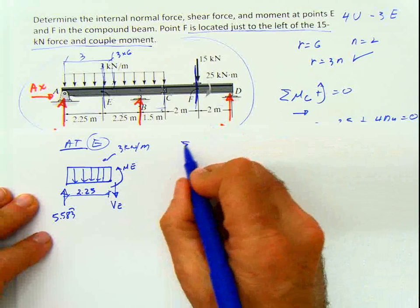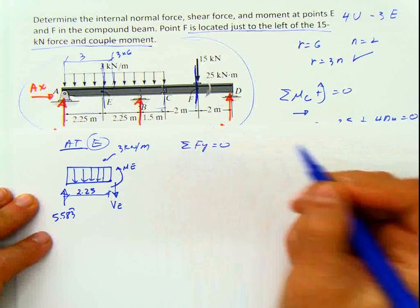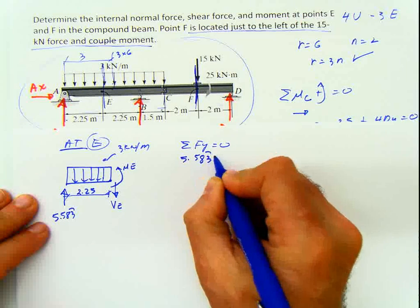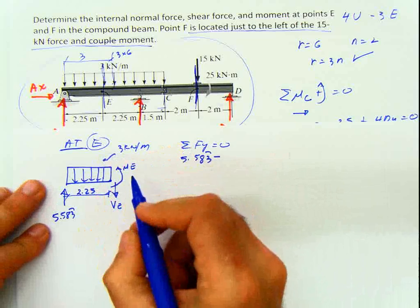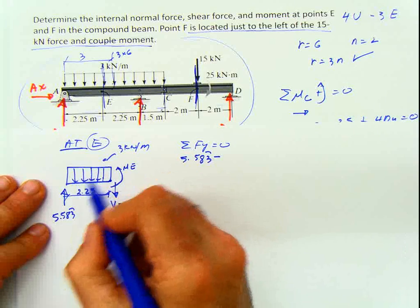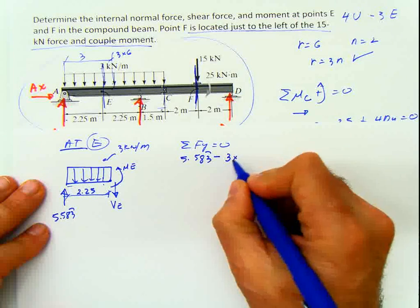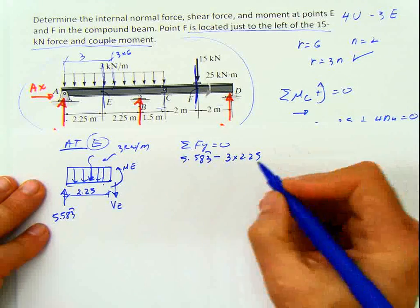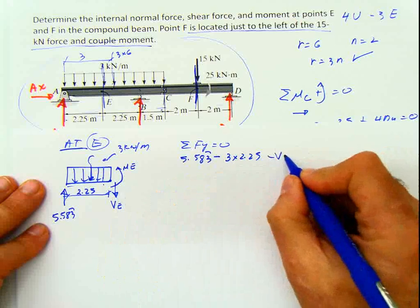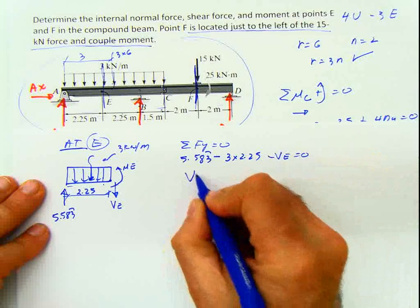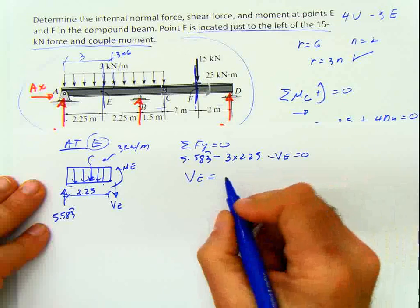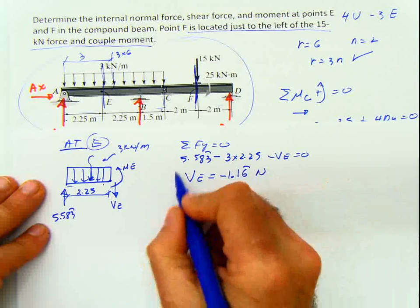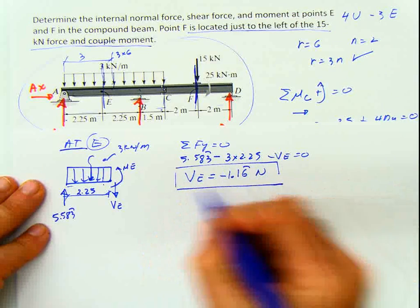Doing summation of forces in y equals 0: 5.583 minus the force from the distributed load, which is 3 times 2.25, minus VE equals 0. So VE equals negative 1.16 kilonewtons.